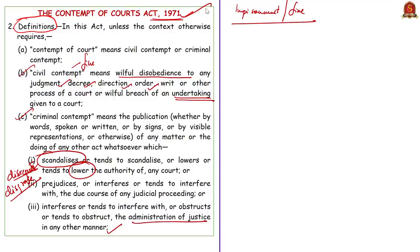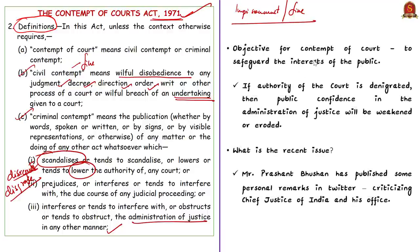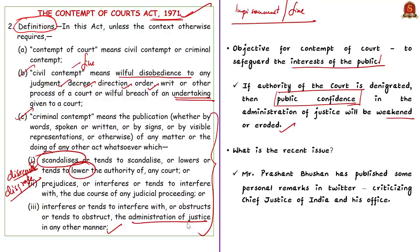The objective behind contempt of court is to safeguard the interests of the public, because if the authority of the court is denigrated or belittled, public confidence in the administration of justice will be weakened or eroded. However, the definition of criminal contempt in India is extremely wide and can be easily invoked. Coming to the issue that led to contempt proceedings against Mr. Prashant Bhushan — it is because of some remarks by him reportedly considered as criminal contempt by the Supreme Court.